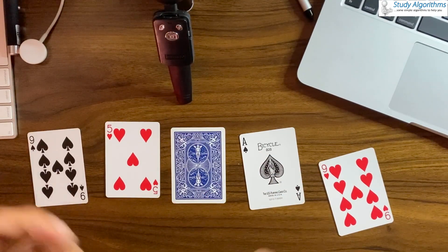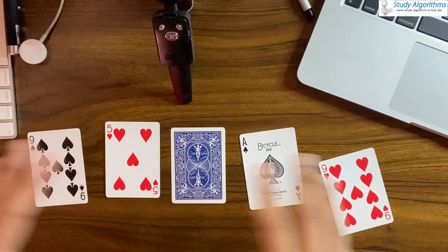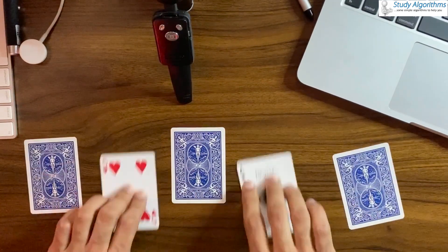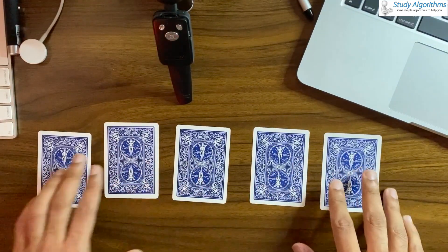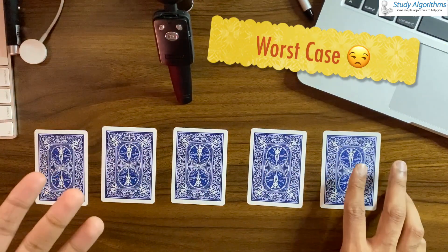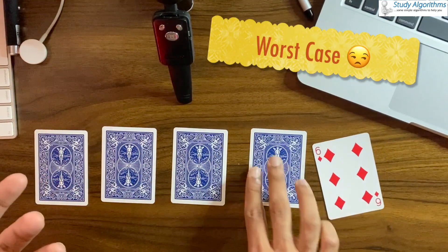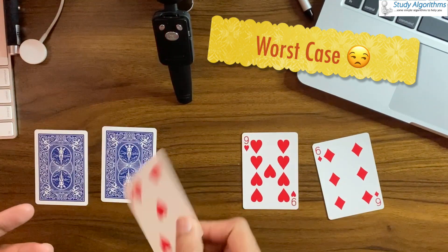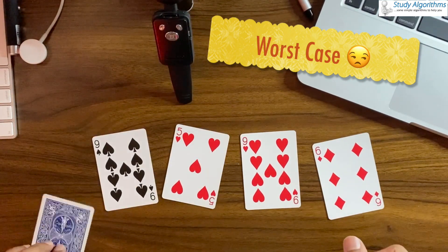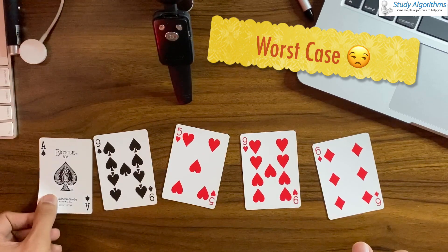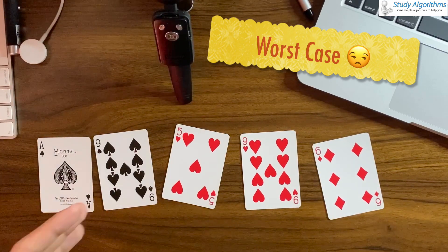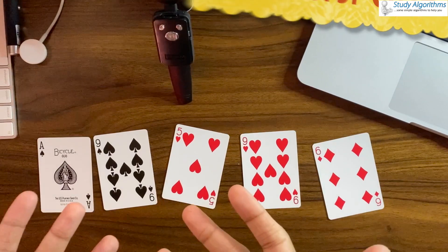But we are interested in the worst case. Let me shuffle this deck of cards once again. The worst case scenario would be I start flipping the cards one by one and I find the ace at the very last. So this is known as the worst case scenario.